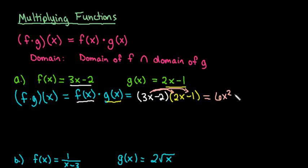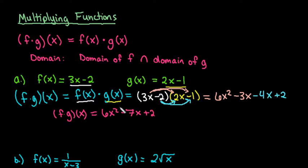3x times negative 1 which gives me negative 3x. And then I would distribute the second value in. So I would take negative 2 times 2x which would give me negative 4x. And I would take negative 2 times negative 1 which gives me positive 2. Our final answer would just be to combine the two values. So f times g of x is going to equal 6x squared minus 7x plus 2.